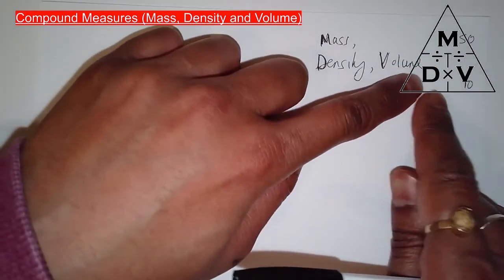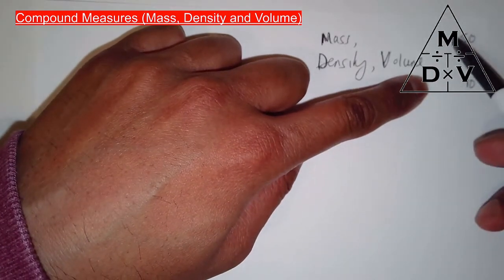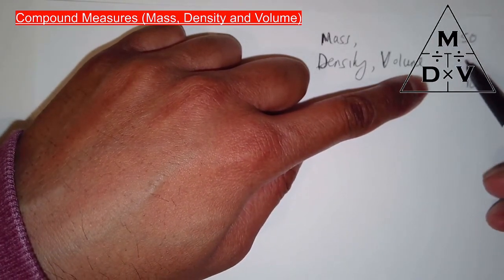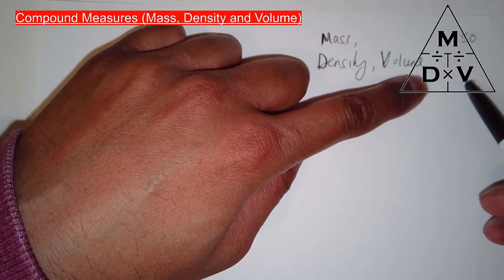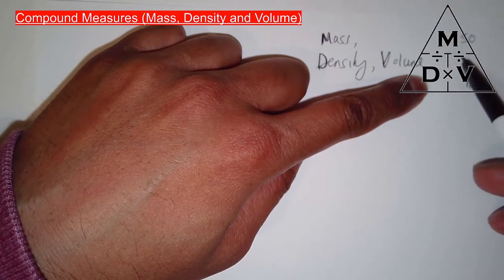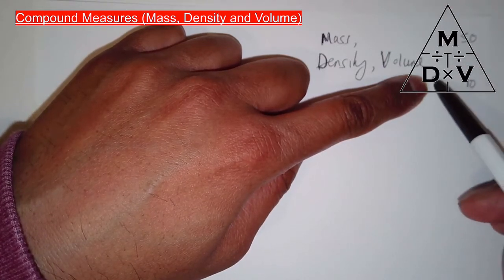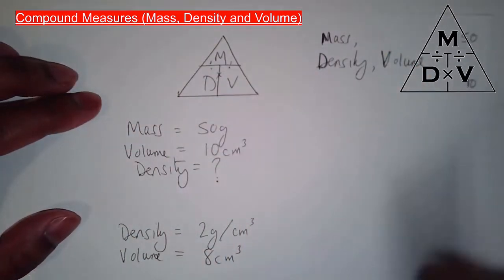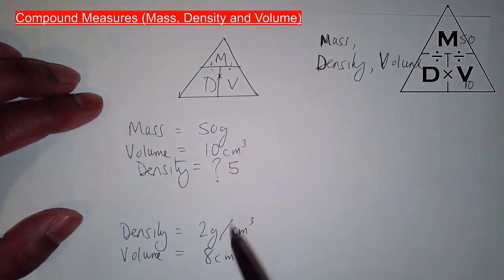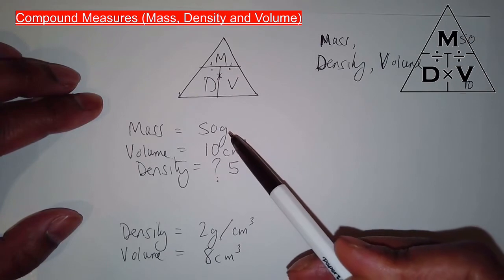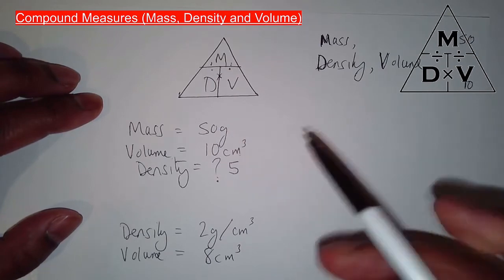This density over here is mass divided by volume, 50 divided by 10, which is equal to 5, density is equal to 5. But what are the units? The units are grams per cm³.